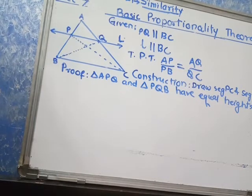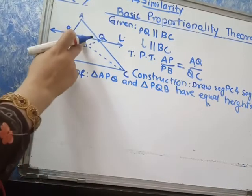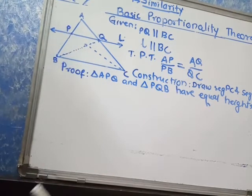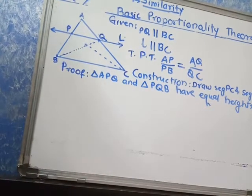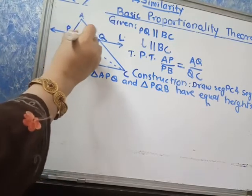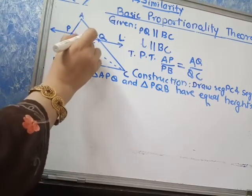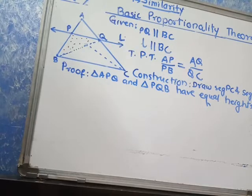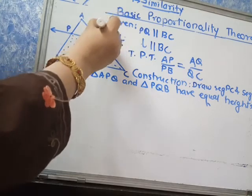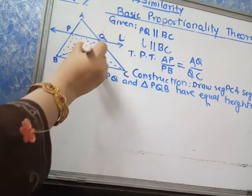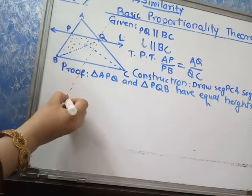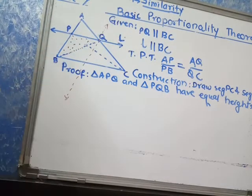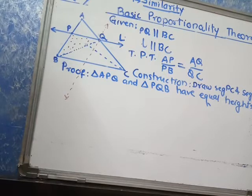Observe triangle APQ and triangle BQP. Both the triangle APQ and PQB have same heights because if we draw this line parallel to AB then both the triangles have same height.